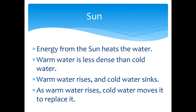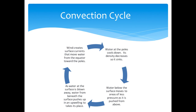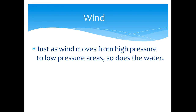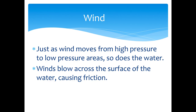That phenomenon also happens in our mantle. So there are three areas of convection: in the mantle, in water, and in the air. Just as wind moves from high pressure to low pressure areas, so does water. Wind blows across the surface of the water causing friction and directing those ocean currents.